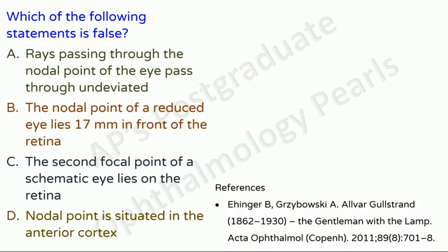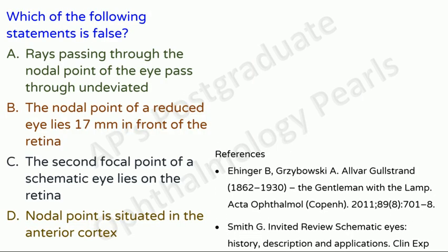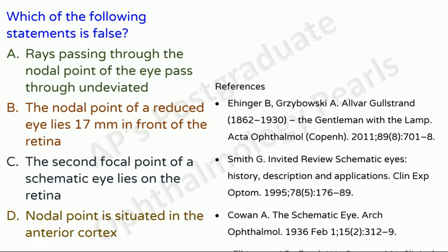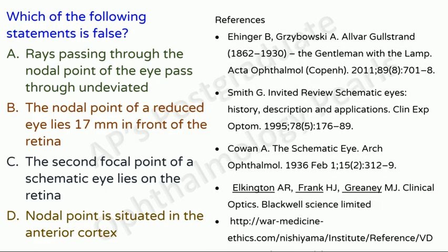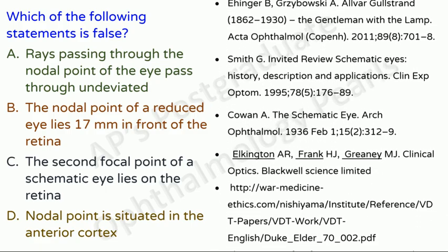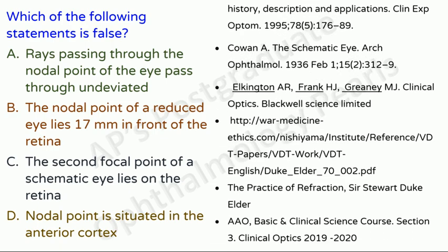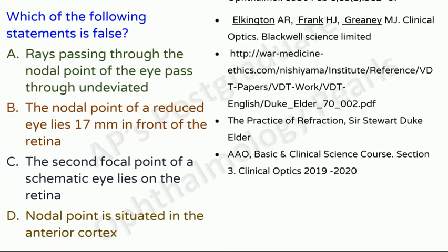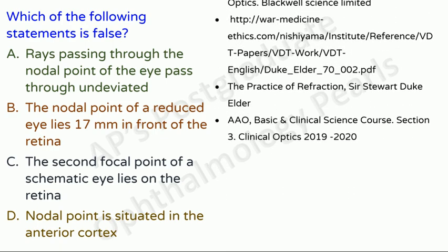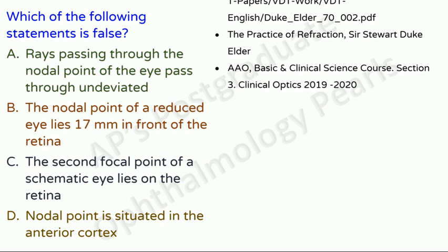So just to test your memory, you can ponder on the answer. Which of the following statements is false? Rays passing through the nodal point of any eye pass through undeviated. The nodal point of a reduced eye lies 17 mm in front of the retina. The second focal length of a schematic eye lies on the retina. The nodal point is situated in the anterior cortex of the lens.